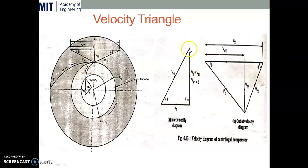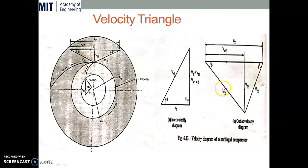In every turbo machine, the fluid — in this case air — enters the vane with the Vr1 component (relative velocity) and leaves the vane with the Vr2 component. Since the impeller is rotating in the anticlockwise direction, after Vr2 we get U2, the tangential velocity component. Then Vr2 and U2 are components of V2, the absolute velocity of air at the outlet. So V2 equals U2 plus Vr2. Vr2 and U2 move anticlockwise, while V2 (the resultant) moves in the clockwise direction, and they meet at a single point.